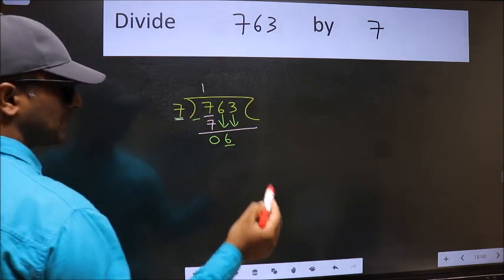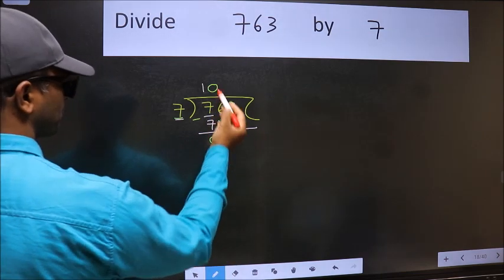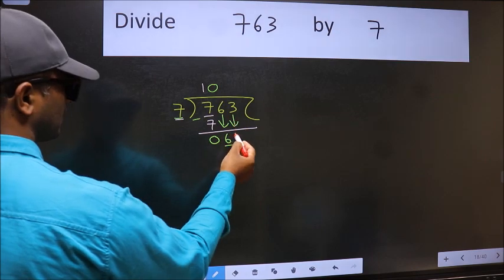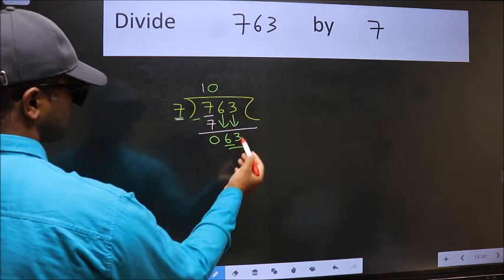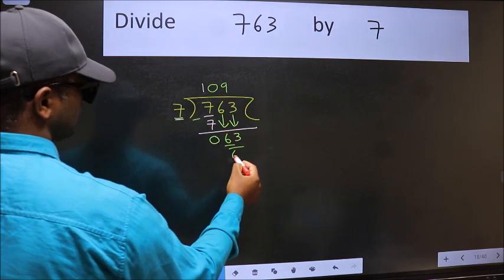And the rule to bring down the second number is we should put 0 here. Then only we can bring this number down. Now 63. When do we get 63 in 7 table? 7 nines, 63.